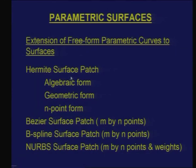We will look at the Hermite surface patch. The word 'patch' refers to a surface with fixed boundaries. Just like we had a Hermite curve, here too we have three different forms of Hermite patch definition: algebraic form, geometric form, and an n-point form — defining a Hermite surface patch by interpolating a given set of points.